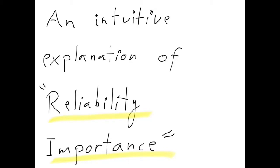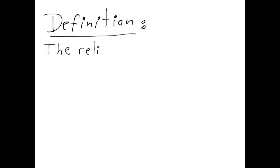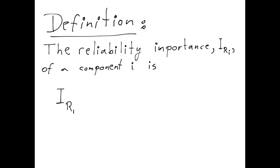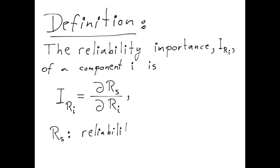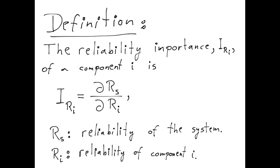In reliability engineering there is a metric called reliability importance. In this video I want to give an intuitive explanation of this concept. Let's start with the definition: the reliability importance I_ri of a component i is defined as the partial derivative of R_s with respect to R_i, where R_s is the reliability of the system and R_i is the reliability of component i.